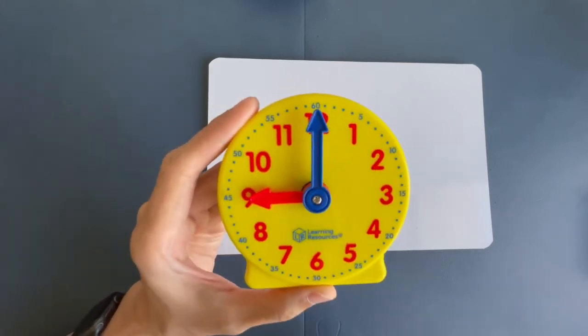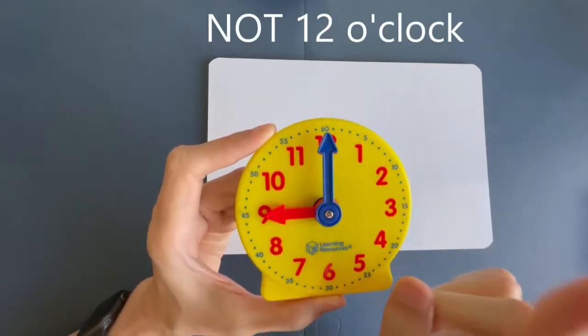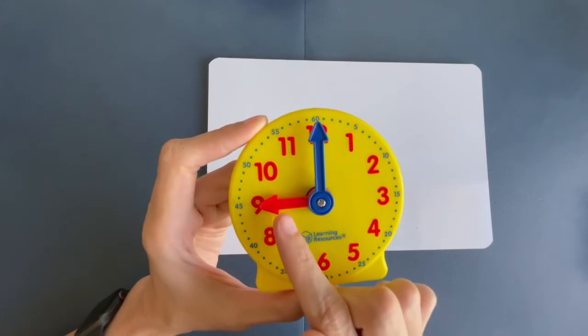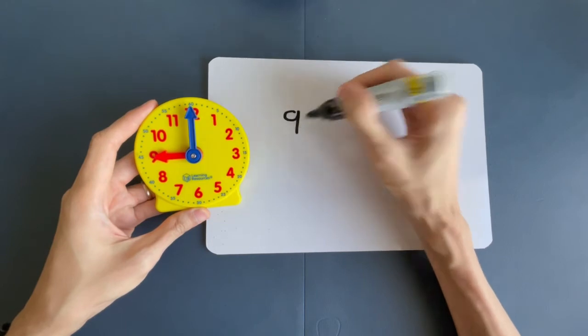Be very careful, though. It is not 12 o'clock, all right? This is the minute hand. Don't look at the minute hand. We want the hour hand. So, it's not 12 o'clock. It is 9 o'clock.